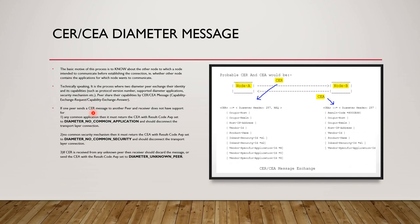The basic motive of the CER/CEA process is for one node to learn about the capabilities of the other node it intends to communicate with before establishing a connection. Node A shares its supported capabilities with Node B; if Node B replies with a result code of success, it means both nodes are on the same platform and can use the connection to create sessions.